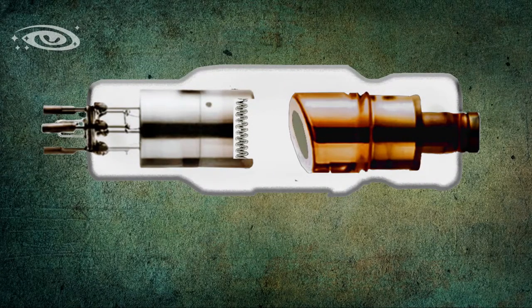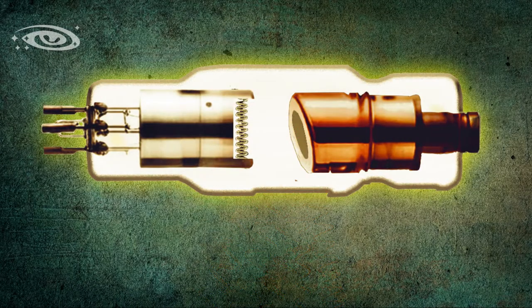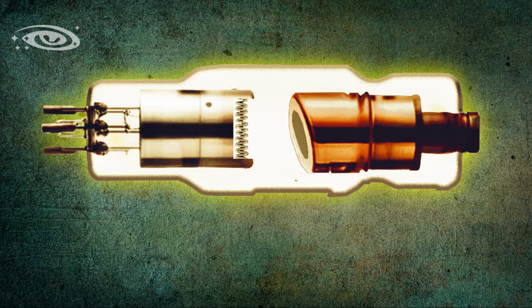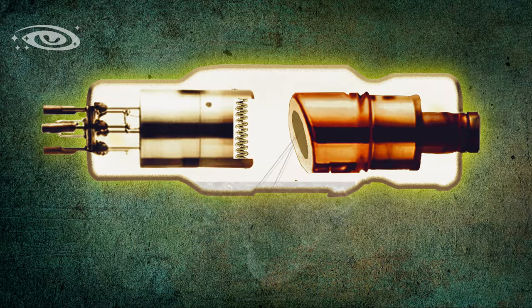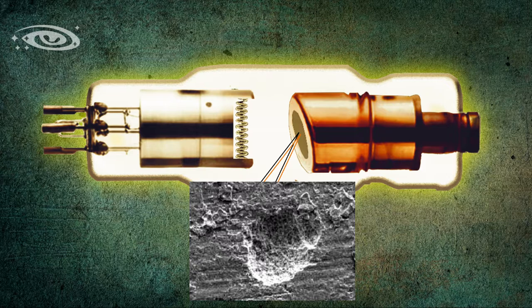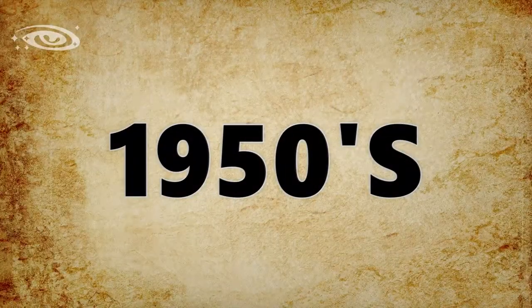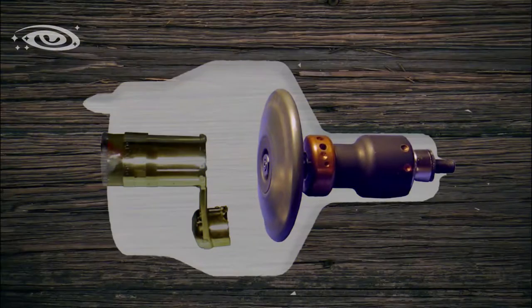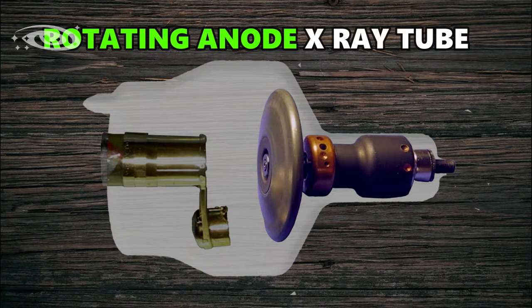Even though this stationary anode produces good efficient X-rays, but still there is a problem in heat dissipation principle. And pitting of anode still soon happens inside the target. So to reduce this, in 1950s, they invented the new X-ray tube called rotating anode X-ray tube.